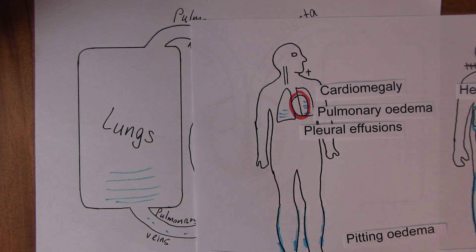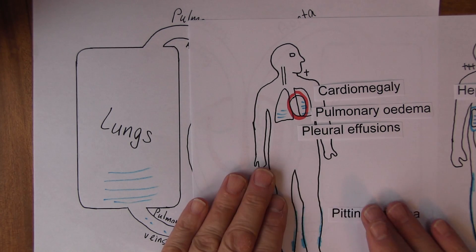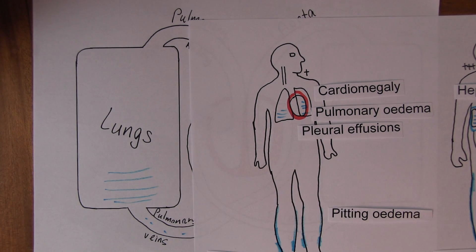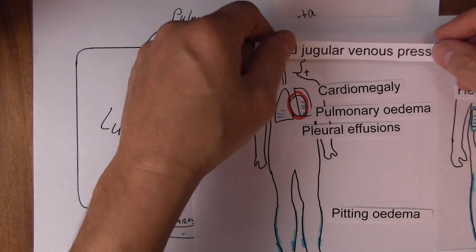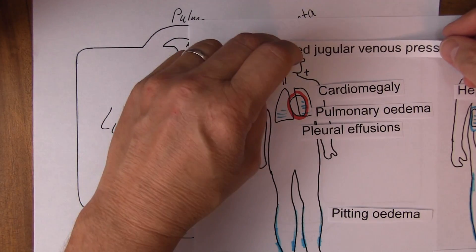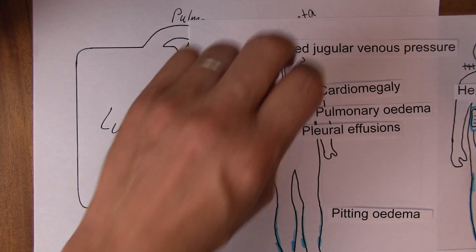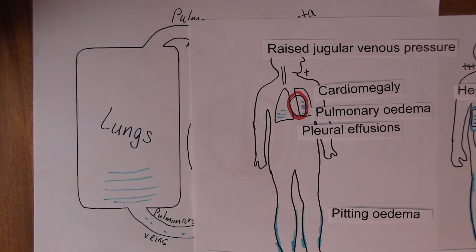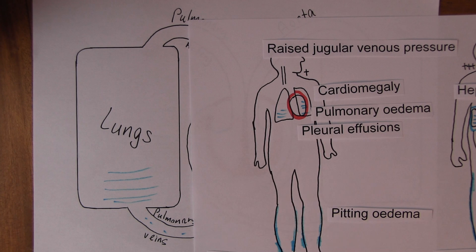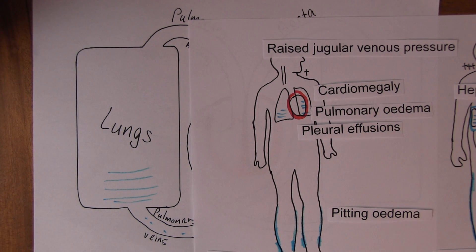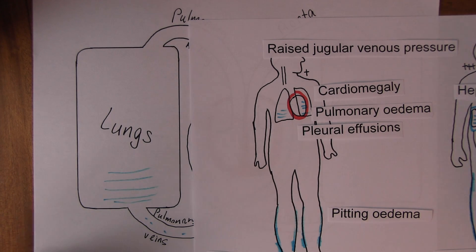We do get pitting oedema and raised jugular venous pressure in left ventricular failure as well, but that's because the circulation backlogs all the way round — we'll go through that again shortly.